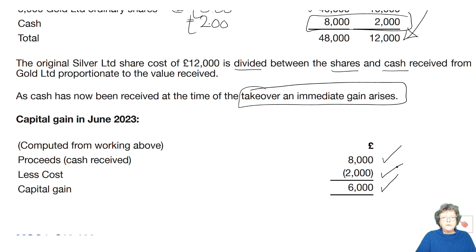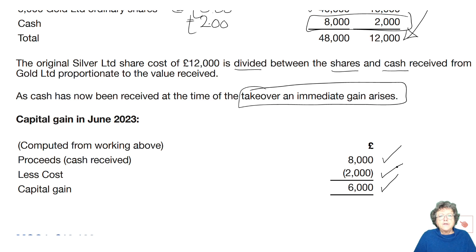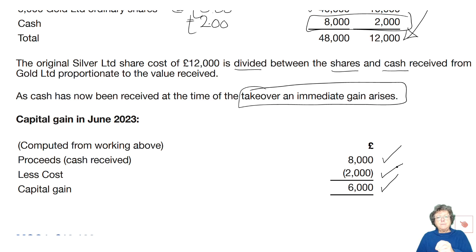Every time you do one of these you need to go through the same process. Take your time, go back to this section, read it again, and practise these questions. They're not the easiest thing in the world but if you follow the step-by-step process — write it down somewhere: what did he have? What did he get? What's it valued at? How do I apportion the cost? — that's the major working. There are a lot of marks to be had with a takeover, so it's important that you get it right.